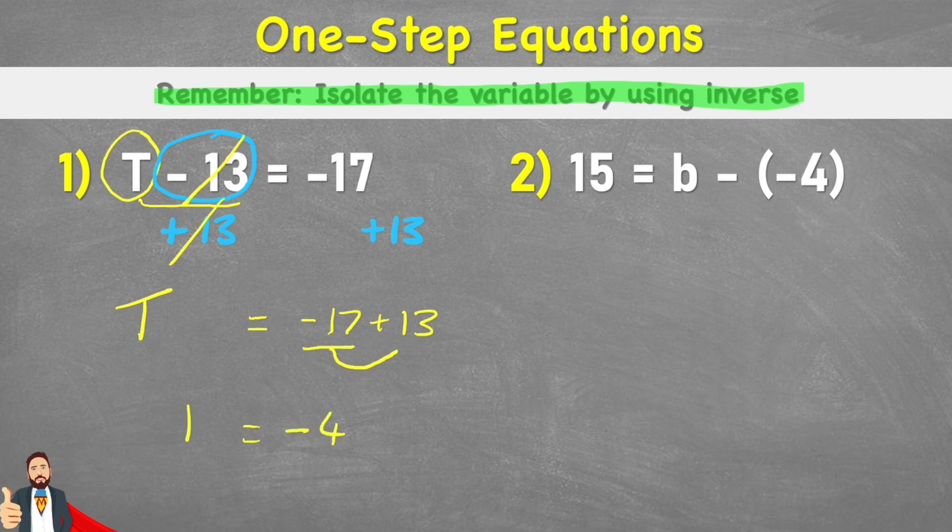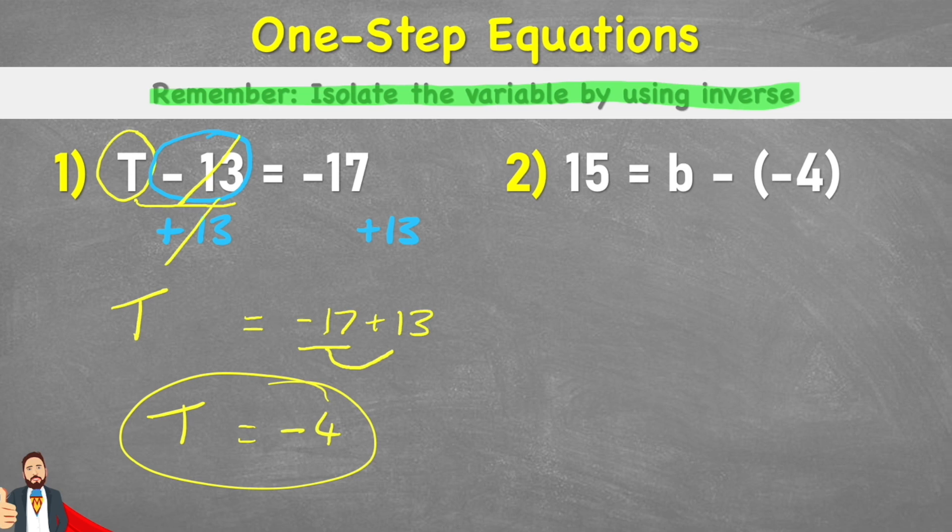So therefore, t equals negative 4. What we can do, just to double-check our work, is we can look back at our question, and we can put negative 4 in the place of t. So let's rewrite it over here, and I'd have negative 4 subtract 13 equals negative 17.